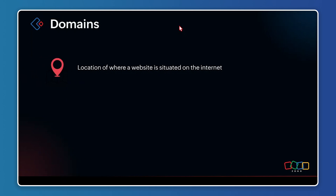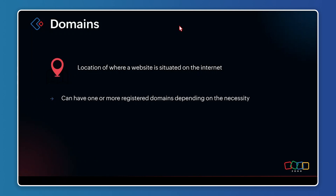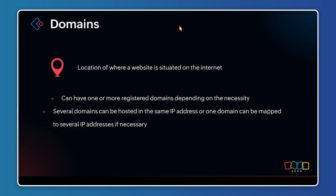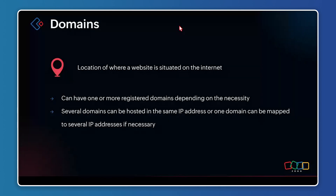Now let's get into understanding domains and controls in Zoho Creator. A domain is essentially a location in the virtual world that identifies where a website is situated. Domains can have one or more registered websites, and you also have the option of having several domains hosted on the same IP address.